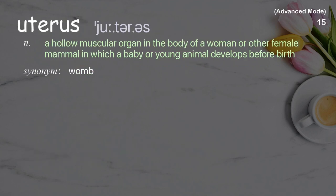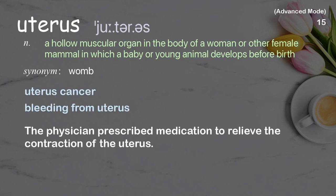Uterus: A hollow muscular organ in the body of a woman or other female mammal in which a baby or young animal develops before birth. Examples: uterus cancer, bleeding from the uterus. The physician prescribed medication to relieve the contraction of the uterus.